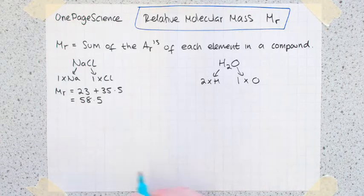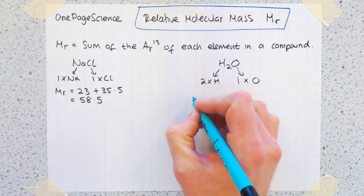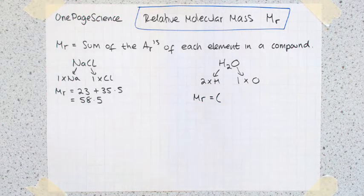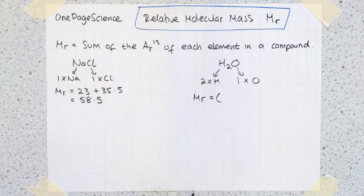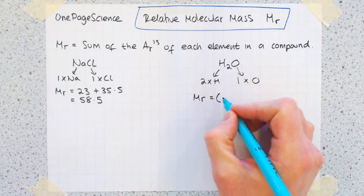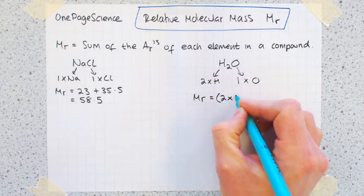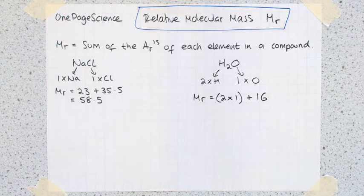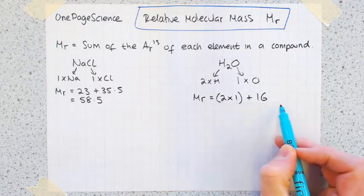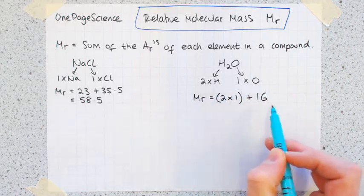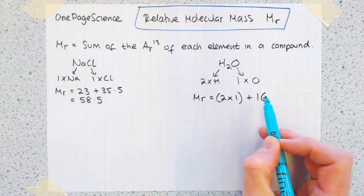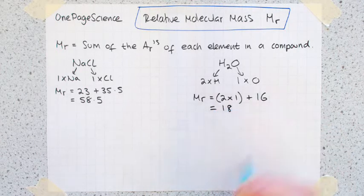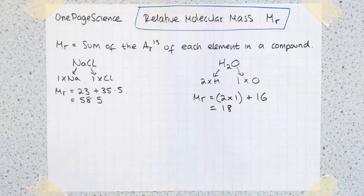Just like before, you grab your periodic table and you would start doing your working. So the MR, and it's always best to put these in brackets. Then you can punch this exactly into your calculator the way you write it out. The relative mass of hydrogen is one. So it's two times one plus the relative atomic mass of oxygen is 16. Write that down on your paper in your exam, because that shows that you understand that there's one oxygen and two hydrogens. And that comes out to give you a relative molecular mass of 18.